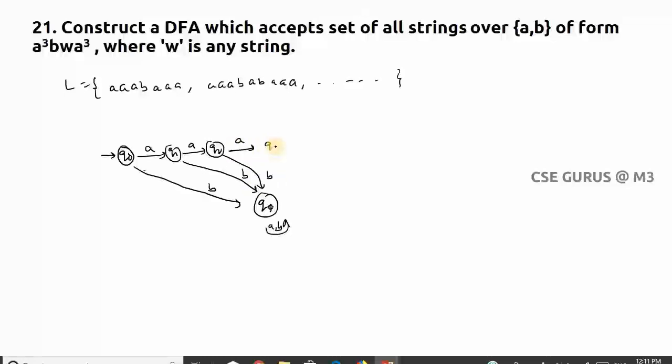Now from q2, the fourth symbol must be—from q3, the fourth symbol must be b only. So here I'll take b going to q4. At q3, if I get a, it needs to go to non-final state.